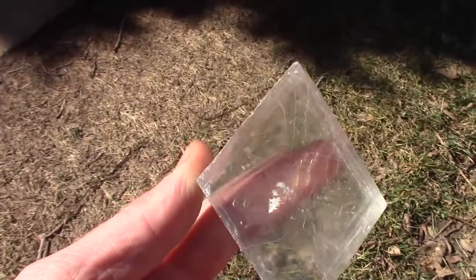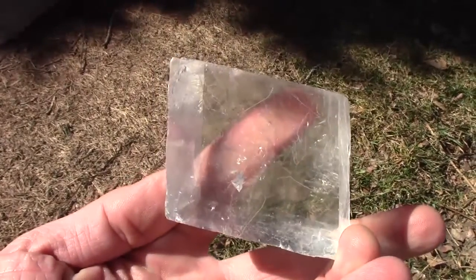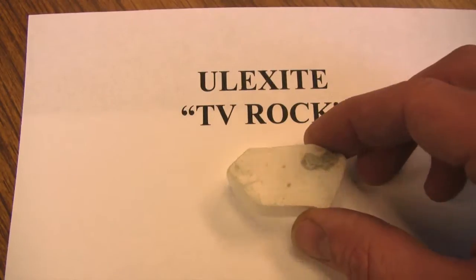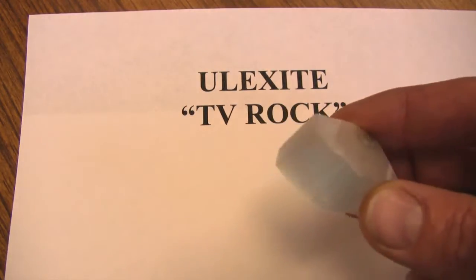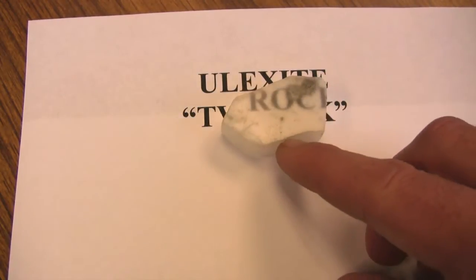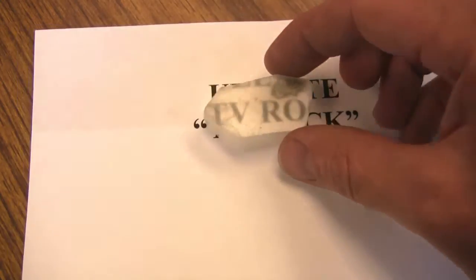Some minerals have optical properties, such as calcite's double refraction, from which science learned much about optics, or ulexite, which like fiber optic cables have total internal reflection which transmits light, and thus an image from one side of the crystal directly to the other side, the reason that this material is called TV rock.